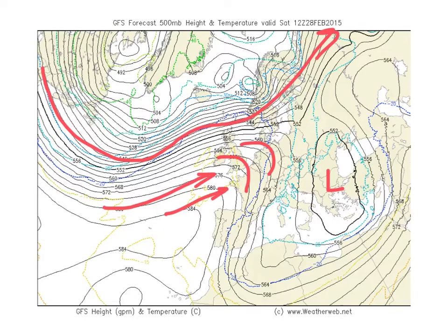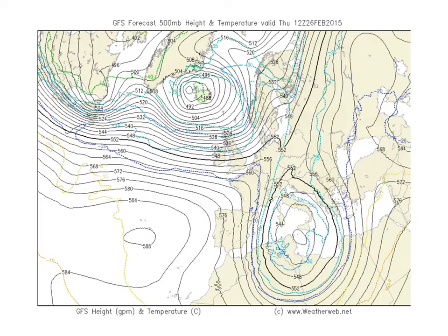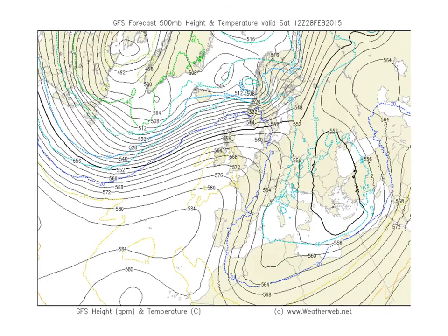So the low that's in the med weakens dramatically because it was relying on colder air being fed into it in order to survive. Because that cold air isn't there, it's weakened. If we just compare — that was Thursday with our low there, and the cold air being fed into the low, which enables it to survive. But coming back to next Saturday, the cold air has gone, the feed just isn't there.